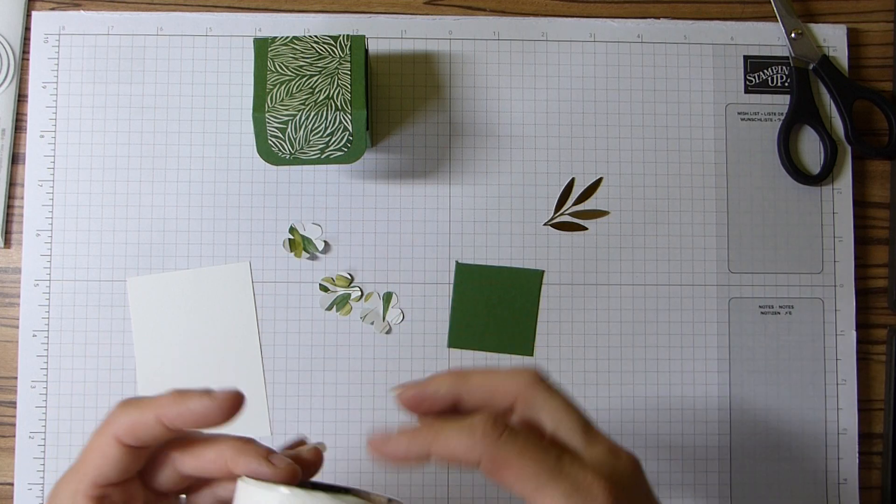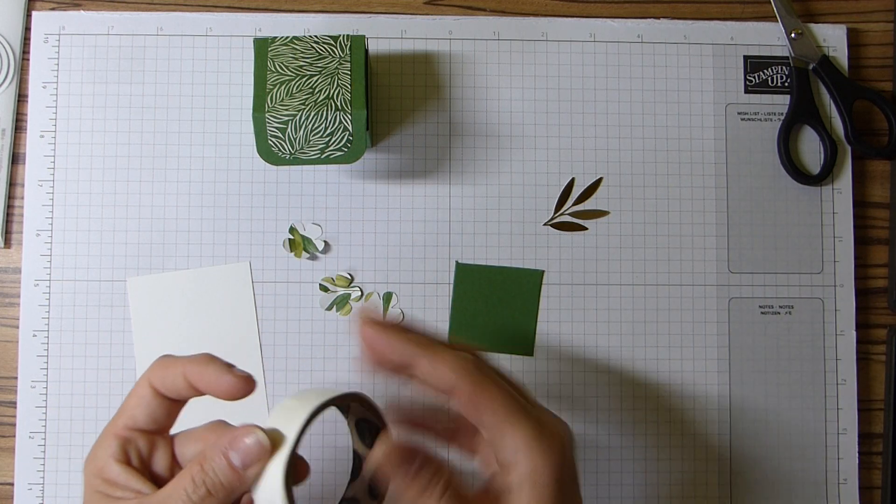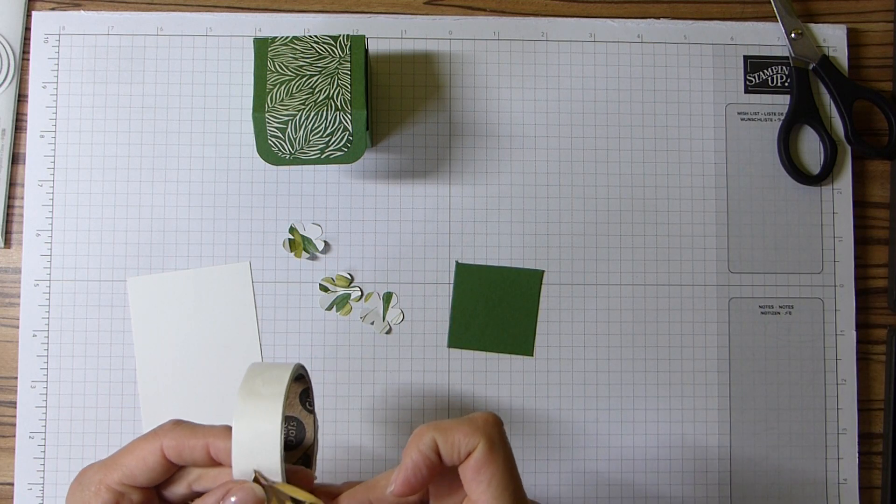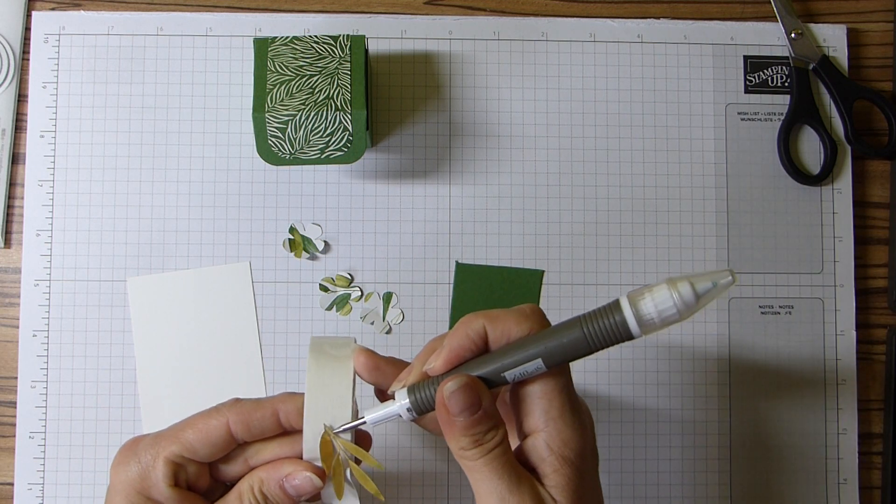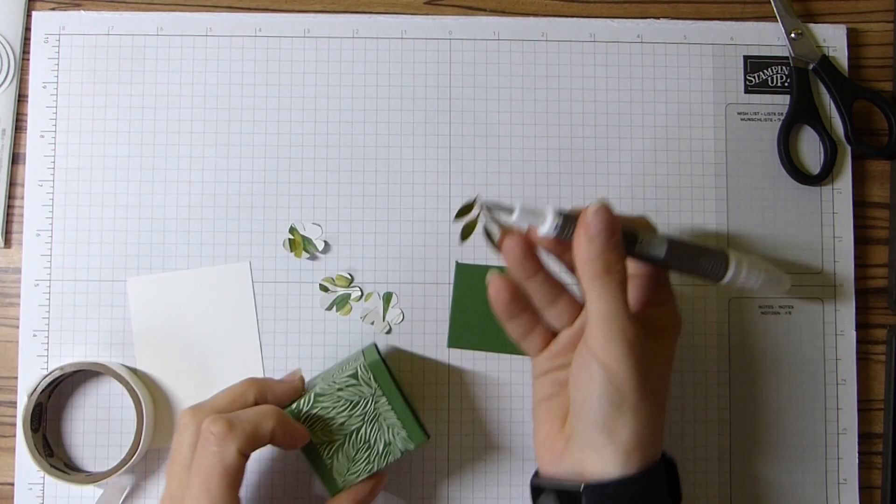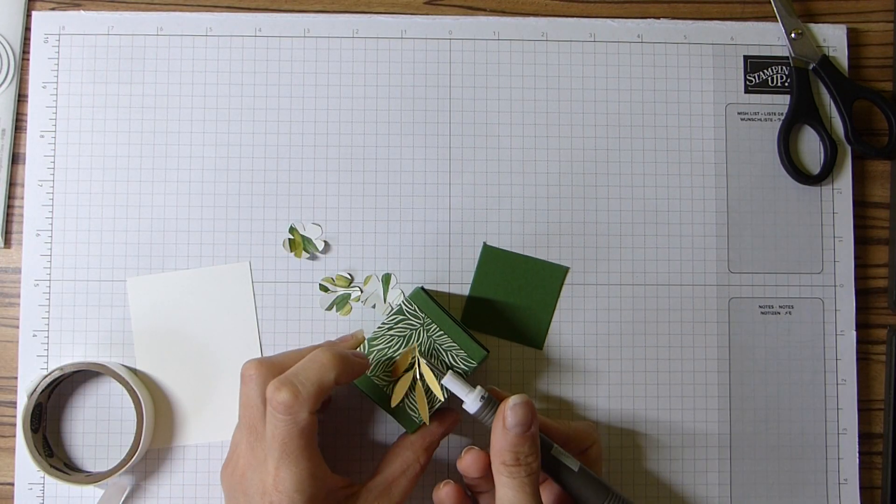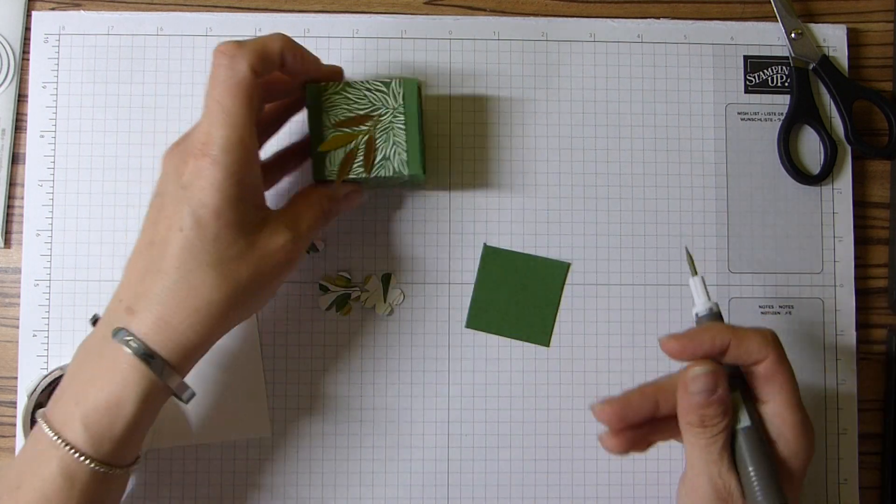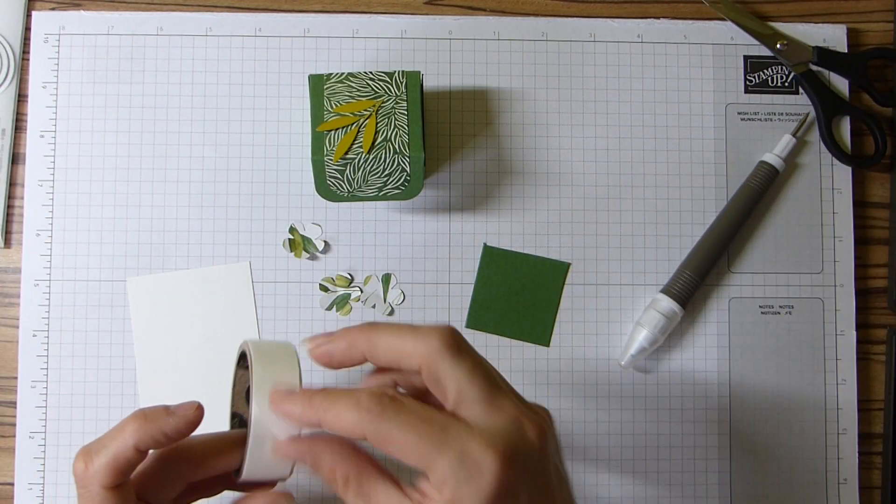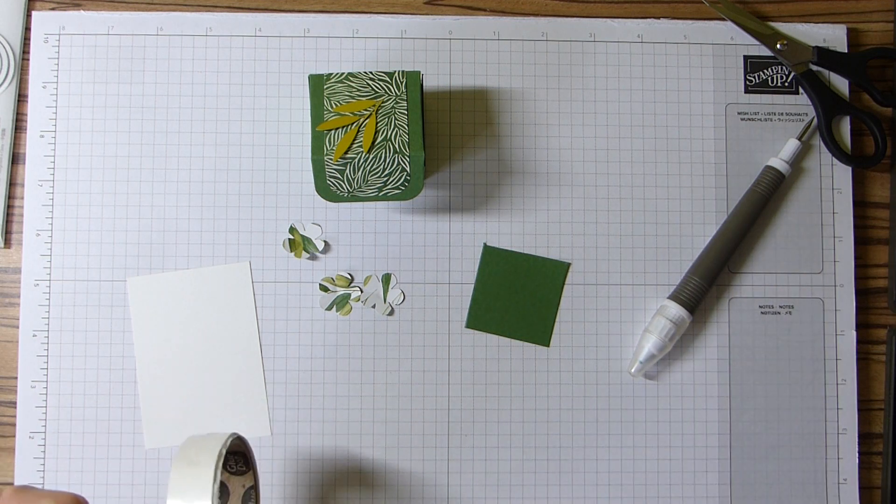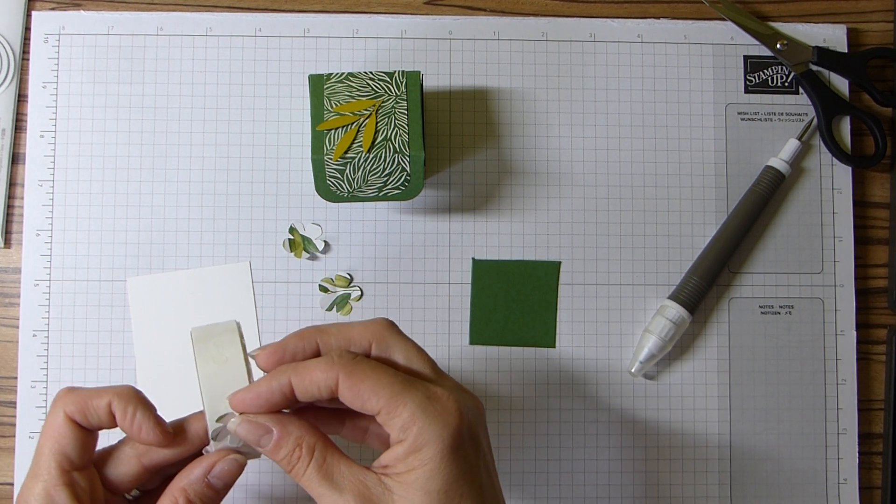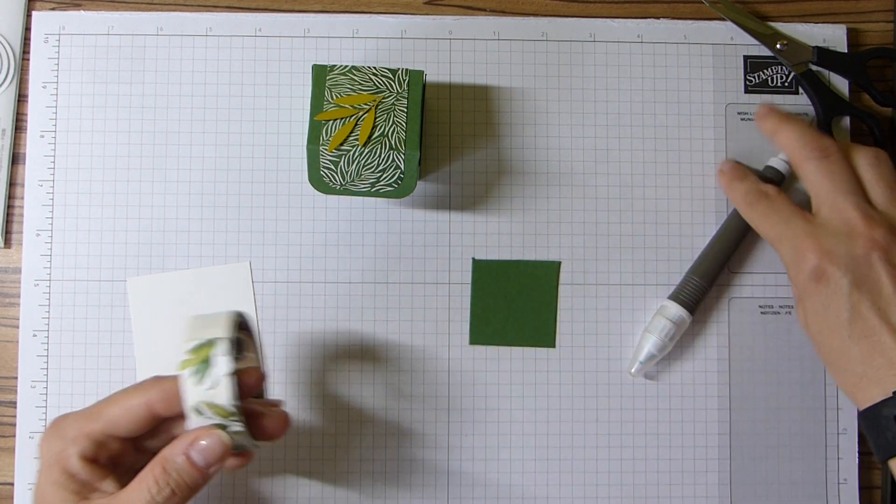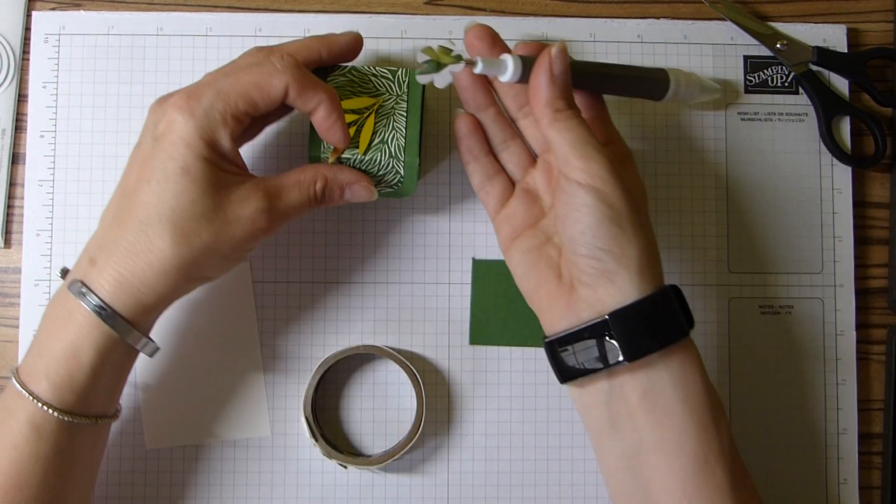Glue dots - so I need to pop a glue dot just on the base of my gold leaf sprig, if you like, and I'm just going to pop that sort of at an angle just there. And then my three flowers here, I'm just going to pop on the glue dots.